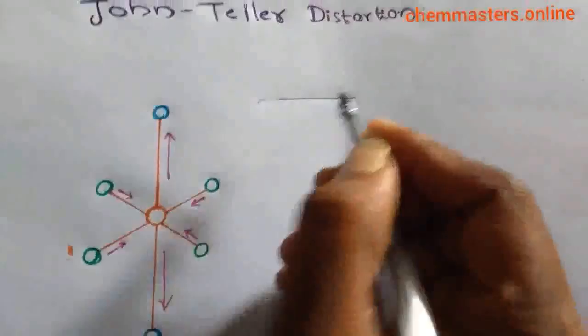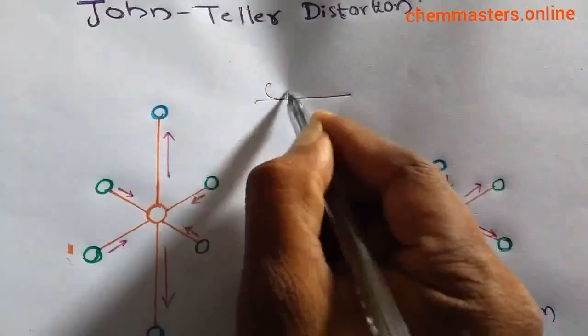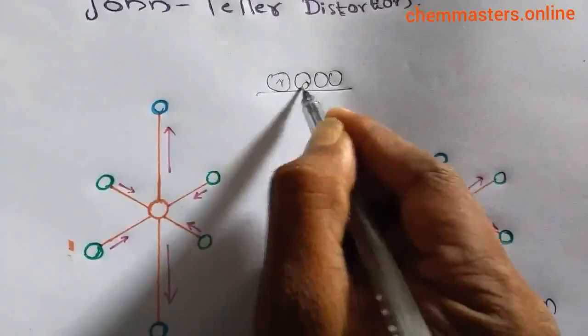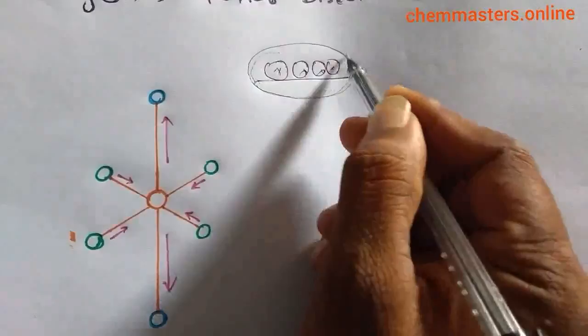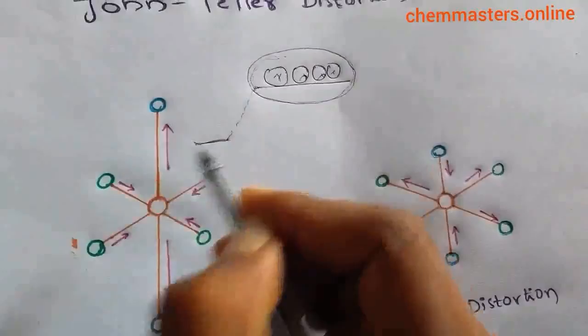So, what is an electronically degenerate state? For example, if electrons occupy orbitals of the same energy level, that is simply called an electronically degenerate state. In this kind of arrangement, in this degenerate state, electrons experience some repulsion, and that is why the energy increases.